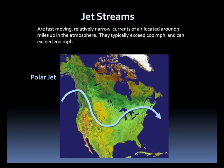Also, jet streams can serve as steering mechanisms for storm systems, represented by the L on the image. The storm systems will then follow the flow of the jet. Now, let's look at various types of wind.